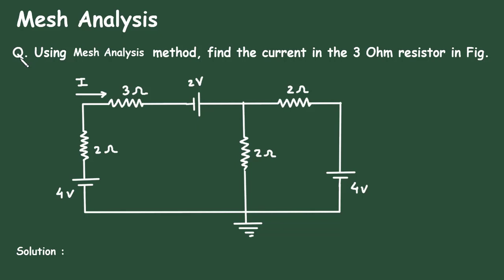Mesh Analysis Question: Using the mesh analysis method, find the current in the 3 ohm resistor in the figure. In this circuit, we have to find the current I using mesh analysis.